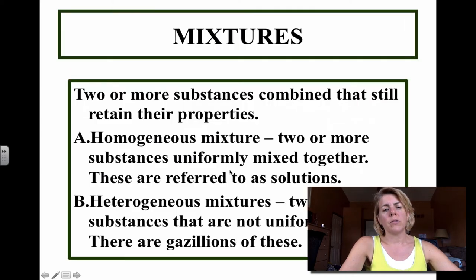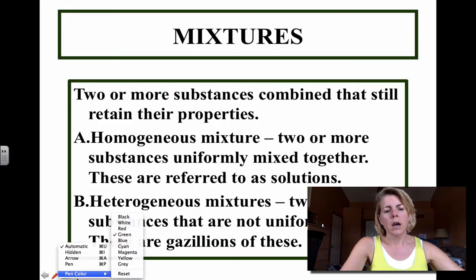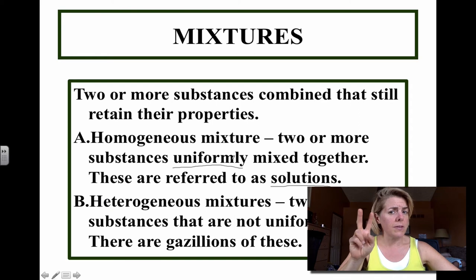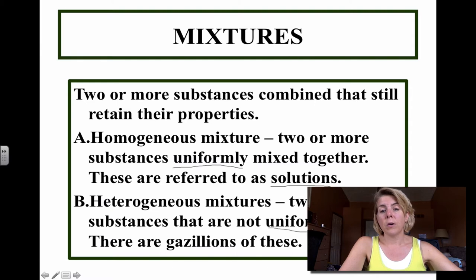Mixtures. So as I mentioned before, the types we can have is heterogeneous or homogeneous. Notice homogeneous, they're also called solutions. They have to be uniformly mixed. They're two or more substances. Heterogeneous, we have two or more that are not uniformly mixed. So when you look at the layers, they look different than each other. For instance, I talked about the Szechuan pepper salt.